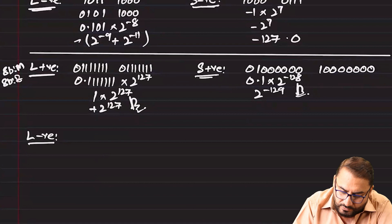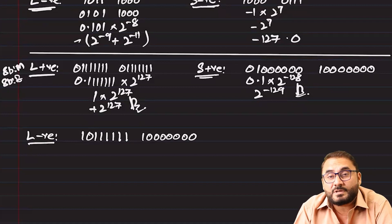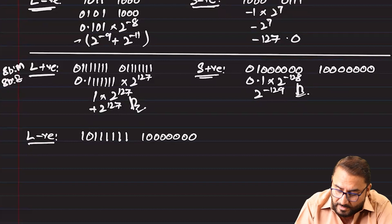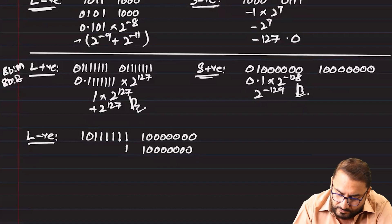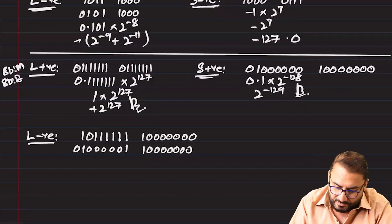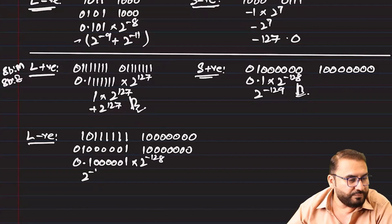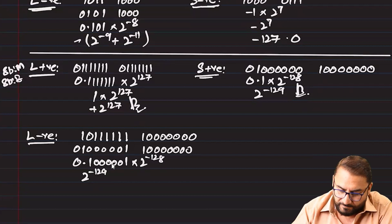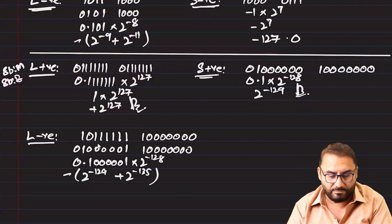For the largest negative number with 8-bit mantissa and 8-bit exponent: mantissa is 10000001 and exponent is 10000000 = −128. Converting the mantissa to positive form gives 0.10000001. Then 0.10000001 × 2^(−128) = 2^(−129) + 2^(−135), and the whole thing is negative. This is the largest negative number, which is the smallest in magnitude.